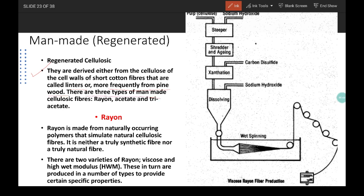There are 3 types of man-made cellulosic fiber: rayon, acetate, and triacetate. Rayon.